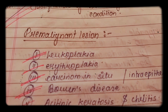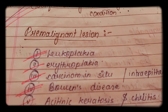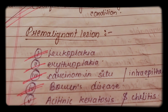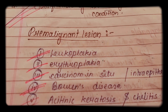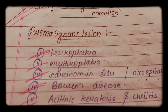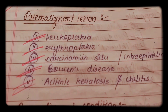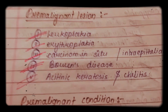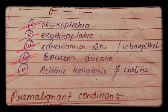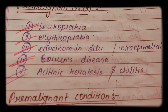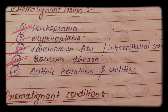A pre-malignant lesion is a morphologically altered tissue in which cancer is more likely to occur than in its apparently normal counterparts. Pre-malignant lesions are divided into: leukoplakia, erythroplakia, carcinoma in situ (also known as intra-epithelial cancer), Bowen's disease, actinic keratosis, and cheilitis.